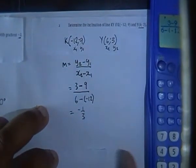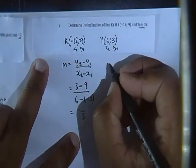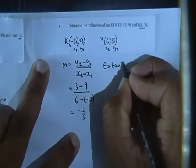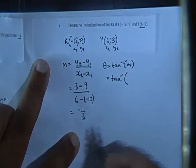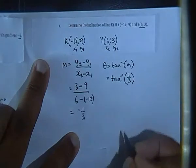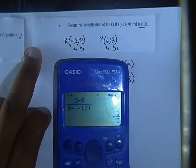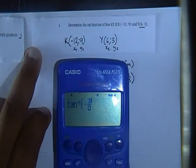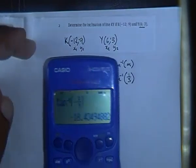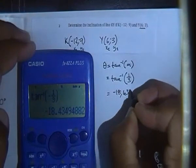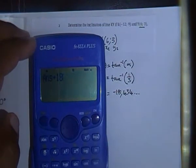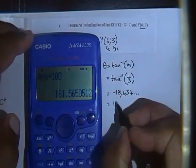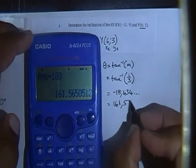Now using our formula, theta = tan⁻¹(m). So theta = tan⁻¹(-1/3) = -18.43°. Because the angle is negative, we add 180°, giving us an inclination angle of 161.57°.